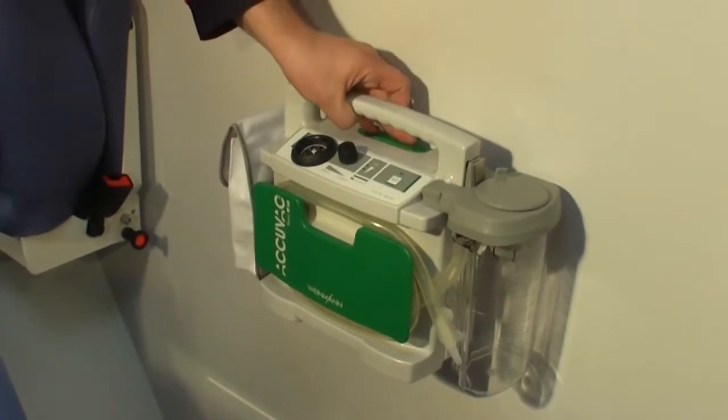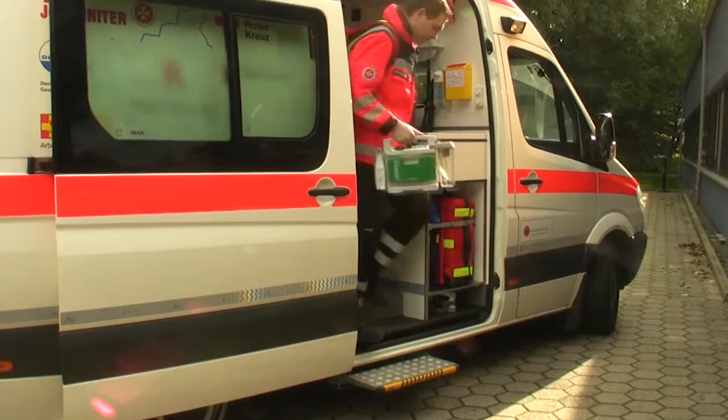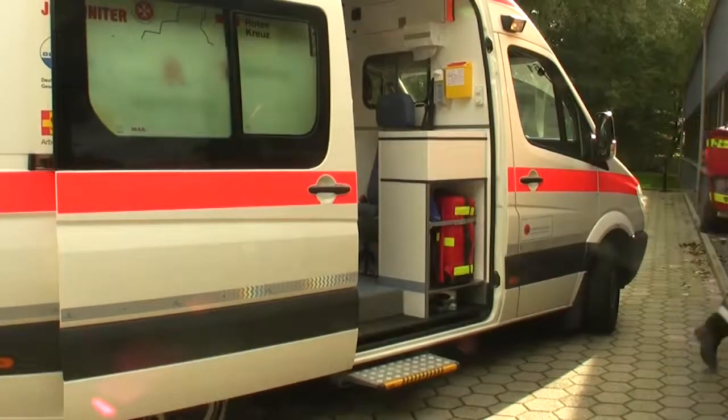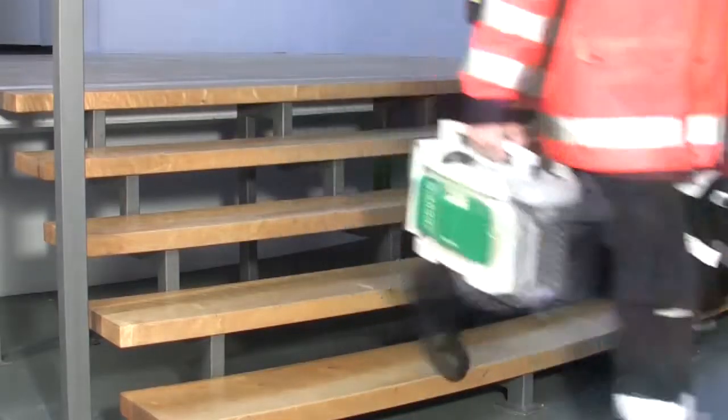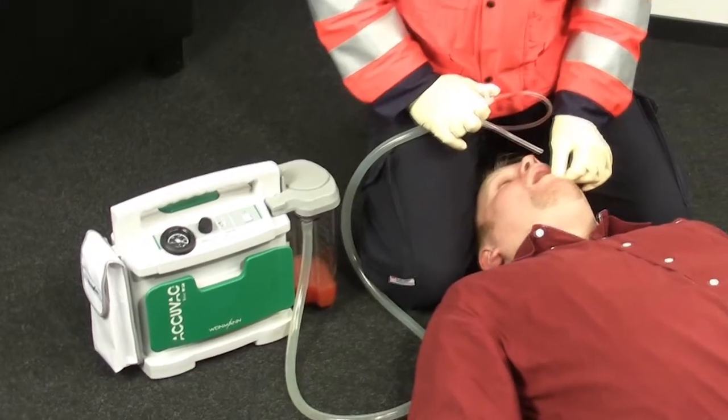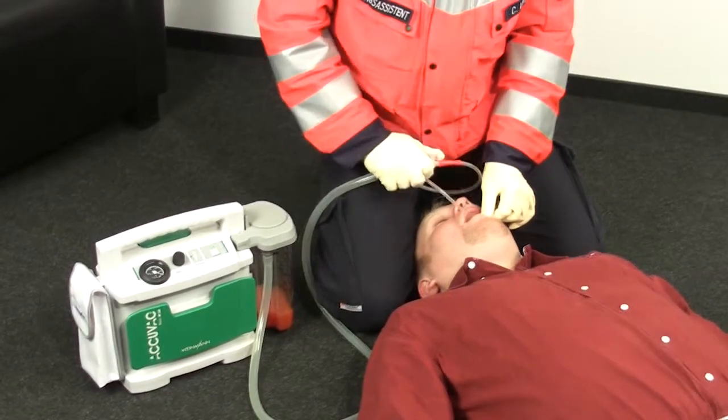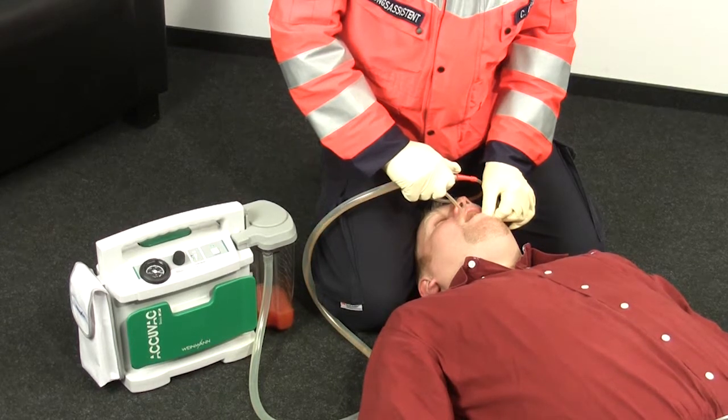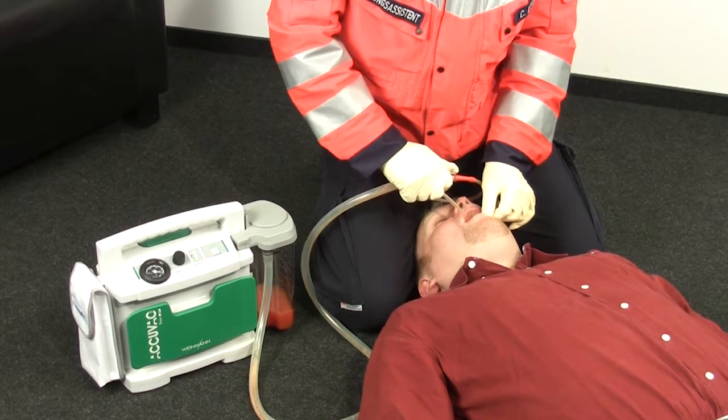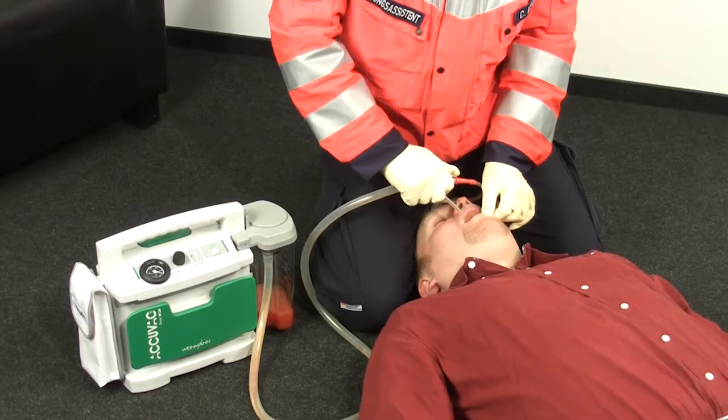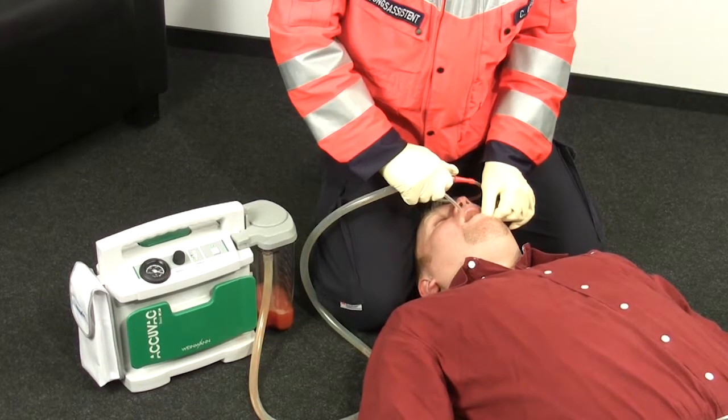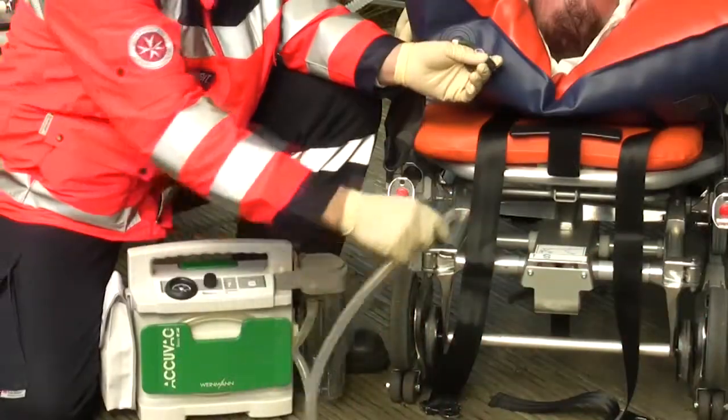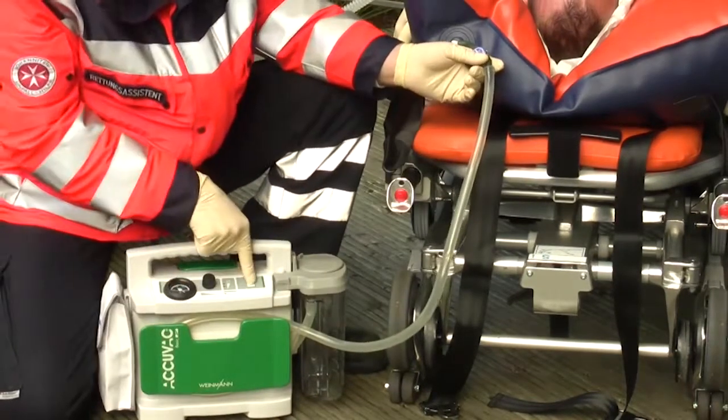ACUVAC BASIC is portable and can therefore be used inside and outside an ambulance. You can use ACUVAC BASIC one, to remove blood, secretions and food particles from a patient's oral cavity, throat and nose and bronchial system, and two, to deflate vacuum mattresses and vacuum splints.